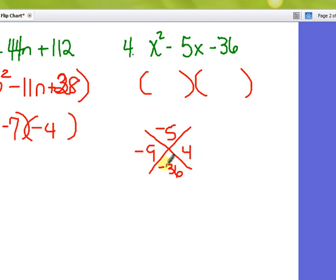Let's check it. When I multiply those together, I get negative 36. When I add those together, I get negative 5. Perfect. It doesn't matter the order in which you put these numbers in the brackets. Just make sure your signs are correct.